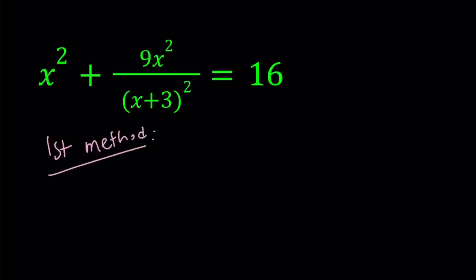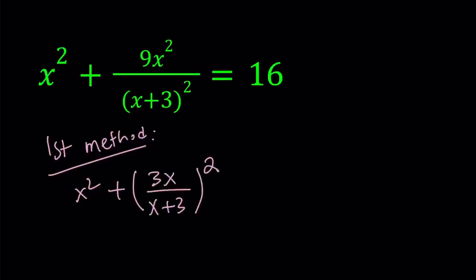Take a look at this expression. This is a sum of two squares, so it's tempting to complete the square. So that's what we're going to do. So x squared plus, and I'm going to write this as 3x over x plus 3, quantity squared. Now you can see better that this is a sum of two squares. But how do you complete the square? There are actually two ways to do it. When you have a squared plus b squared, you can either add 2ab or you can subtract 2ab. In this case, I'm going to subtract. You're going to see why in a little bit.